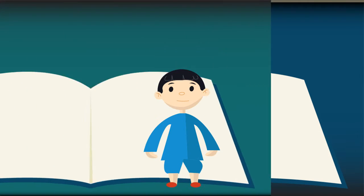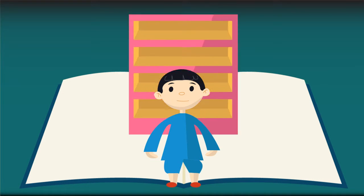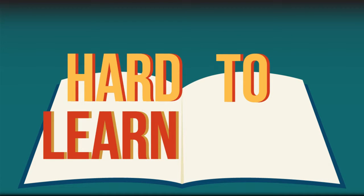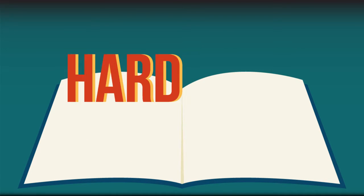On the other side, one kid has no books at all, or even a single gadget. And that makes him hard to learn, and that makes him hard to be successful.